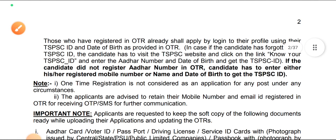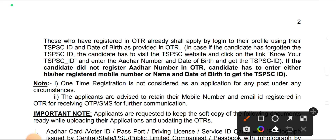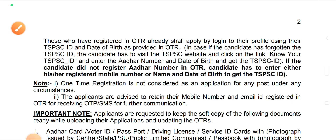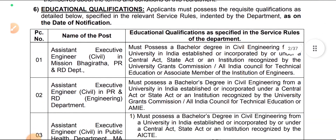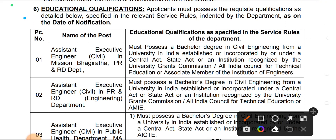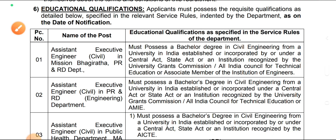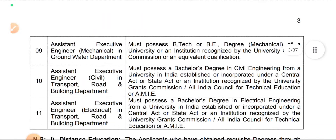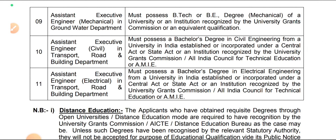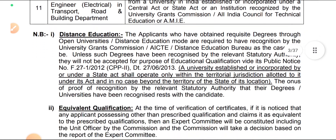Those who are already registered can directly login and fill this form. If you forgot your password, you can use your OTR number — that will be your password sent to your mobile number. The educational qualification required is a bachelor's degree in civil engineering for all posts. There is no vacancy for diploma holders — only B.Tech degree holders can fill this form.